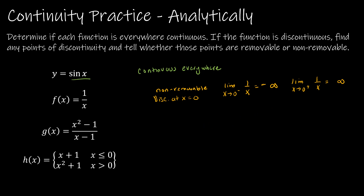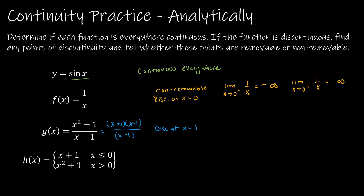Our next function is g of x equals x squared minus 1 over x minus 1. I'm going to start by looking at the denominator — we can't let that equal 0. So it's discontinuous at x equals 1, because 1 minus 1 is 0. Now, is it removable? In a rational function, if I can factor — and the numerator here factors into (x + 1)(x − 1) — if it factors and that point of discontinuity cancels, then it's considered a removable discontinuity at x equals 1.